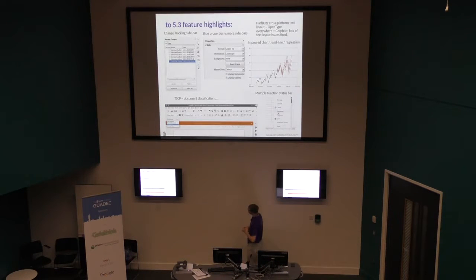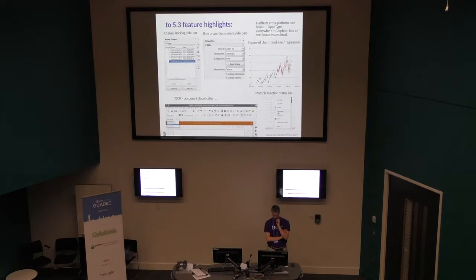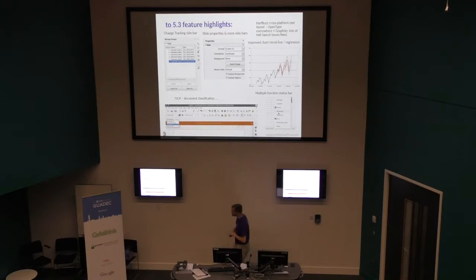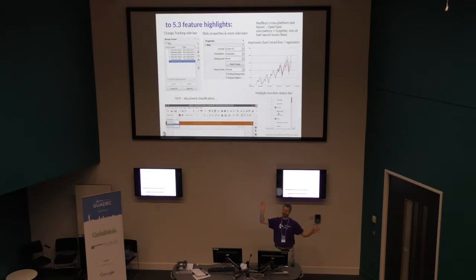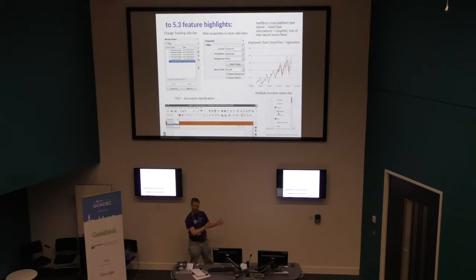Some nice new things in 5.3: HarfBuzz is one of the key features. OpenType everywhere, some pretty nice Graphite integration. Also starting to use the sidebar more — change tracking, slide properties, page layout stuff. And there's TSCP — Transatlantic Secure Collaboration something-or-other — done for the Dutch military. They want to copy text out of a confidential document into another document, and suddenly that document becomes infected with confidentiality. It gets a huge watermark saying 'confidential,' and it can't be mailed out of the building unless digitally signed by a brigadier general. There's per-paragraph signing and fragments of text — it's not DRM, it's not enforced, but it's a helpful tool to avoid screwing up.